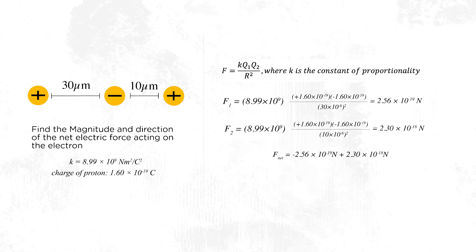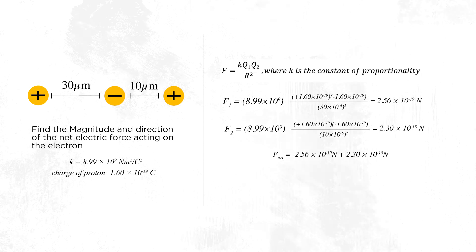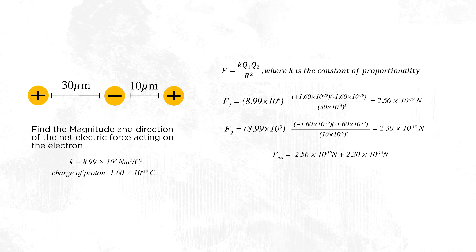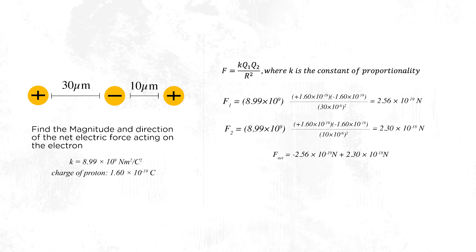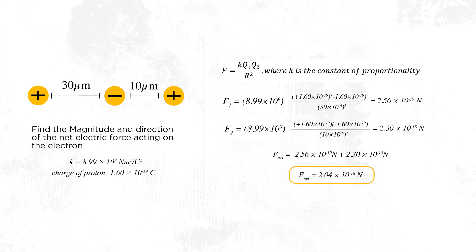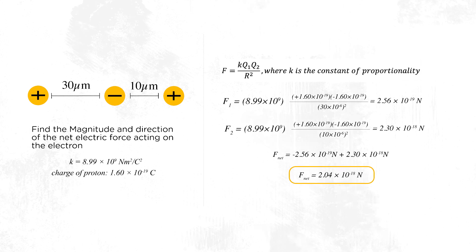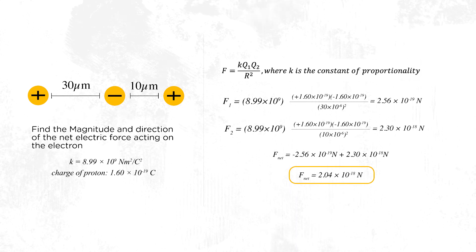Because opposite charges attract, F1 points left — that's in the negative direction — and F2 points right, in the positive direction. Therefore, in finding the net force we negate F1, and the result is 2.04 times 10 to the power minus 18 newtons.